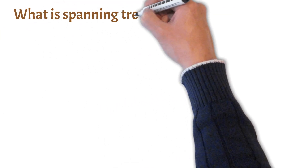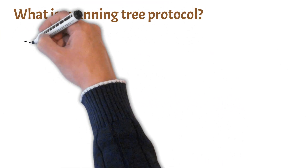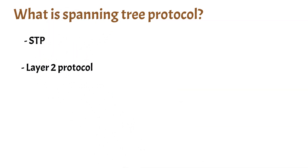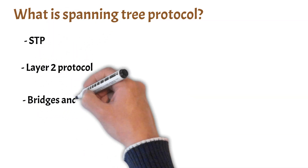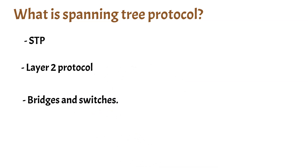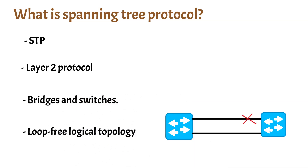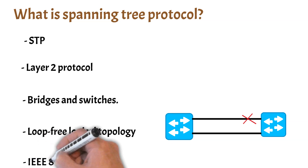So what is spanning tree protocol? Spanning tree protocol, or STP, is a layer-2 protocol that runs on layer-2 devices such as bridges and switches. The main purpose of STP is to ensure that you have a loop-free logical topology when you have redundant paths in your network, or you can say it provides path redundancy while preventing undesirable loops. The specification of STP is IEEE 802.1D.